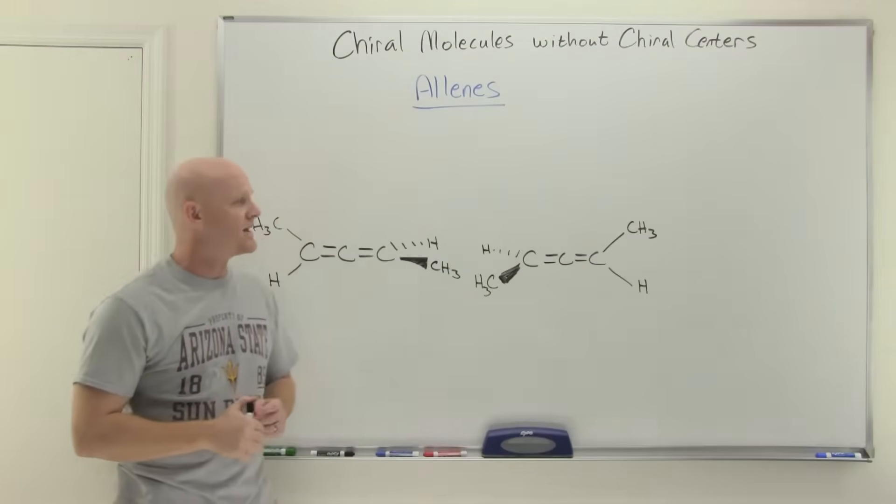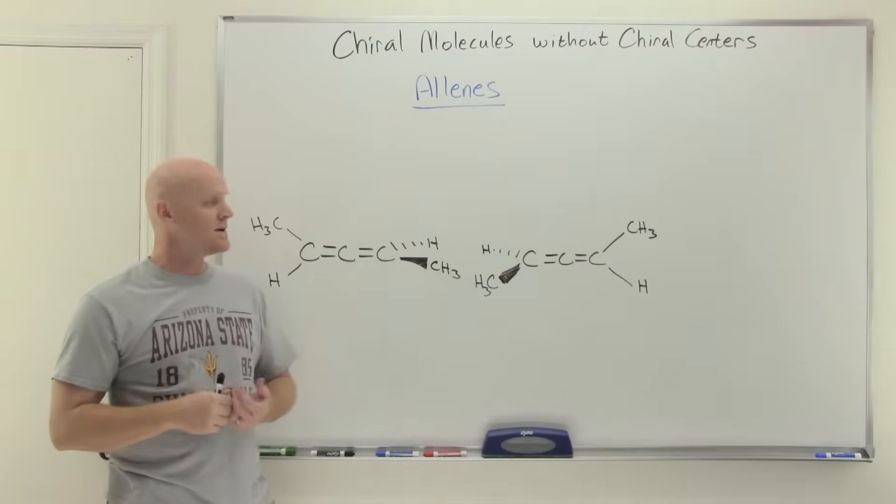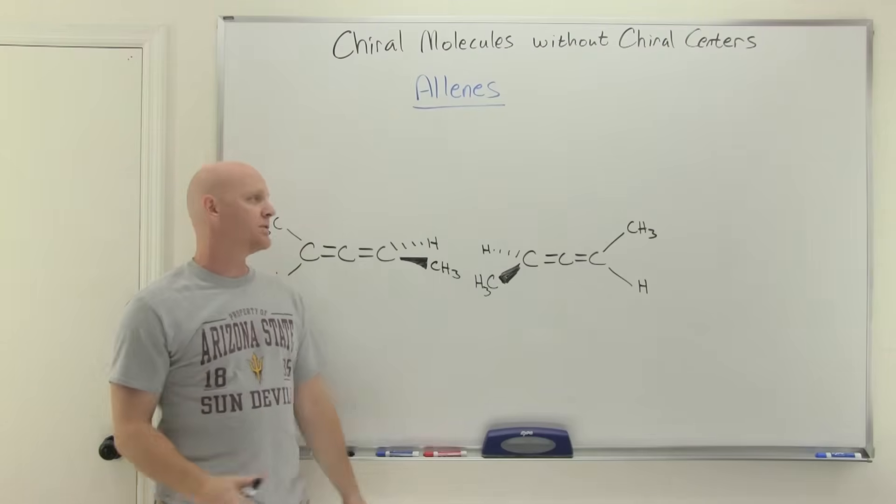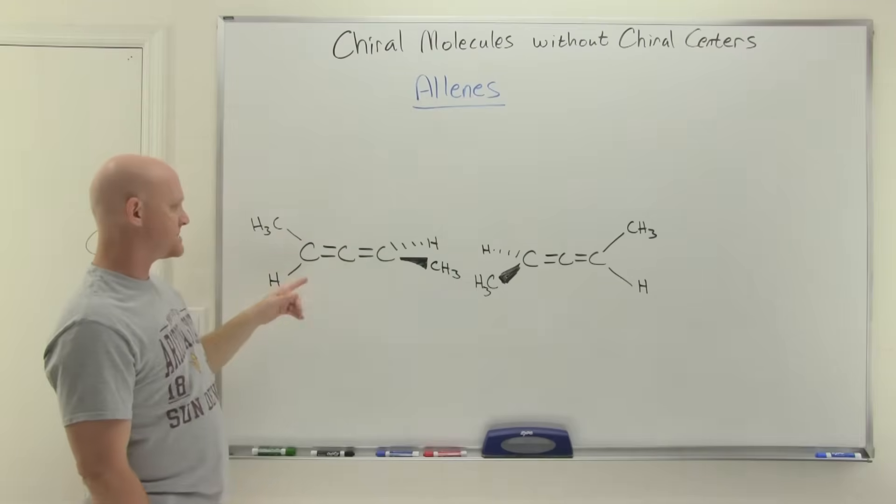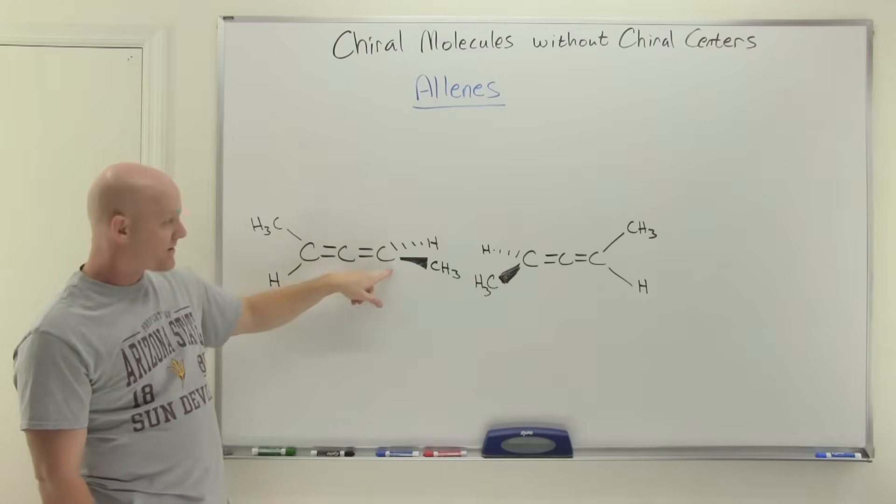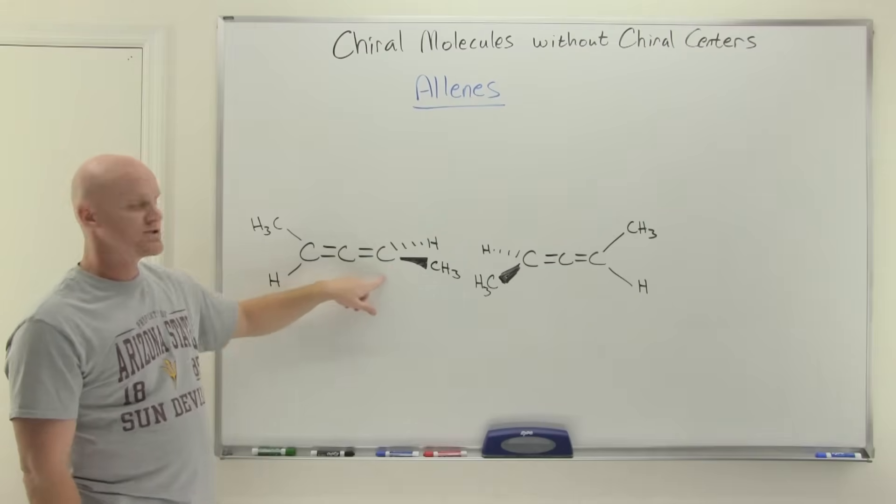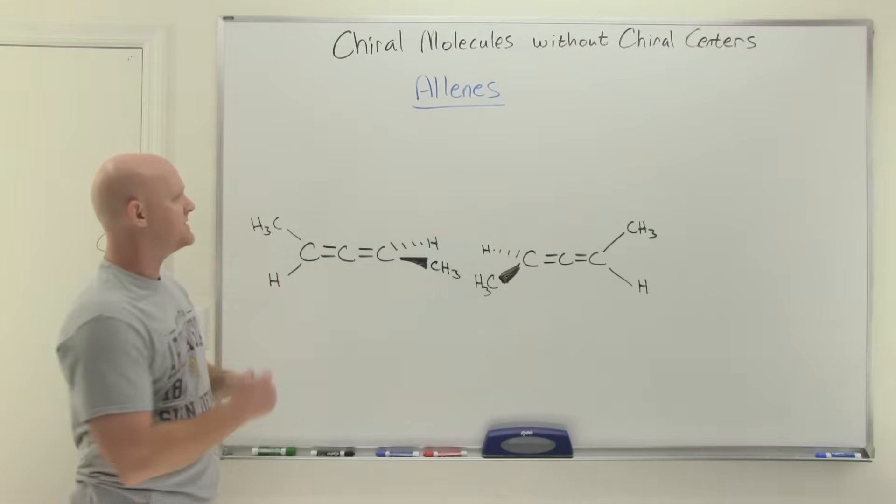Alright. So now we're going to take a look at a couple of examples of molecules that can be chiral, even though they don't have any chiral center. And the first comes up with what's called an allene. And an allene simply has this pattern of a carbon-carbon double bond with another carbon-carbon double bond butted up right next to each other. And something interesting kind of happens here.